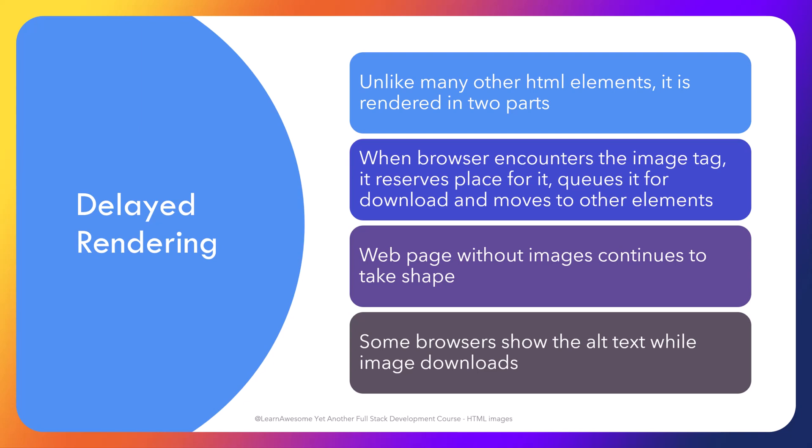The GET request simply means the browser requests the image contents from that server, be it the one hosting the HTML document or any other specified by the source attribute. The moving on to the next element part is critical for performance reasons, as if the browser stops at this stage to wait for the image, your web page would remain a white screen for a potentially long time — something you can't afford with impatient visitors.